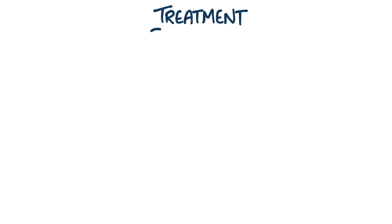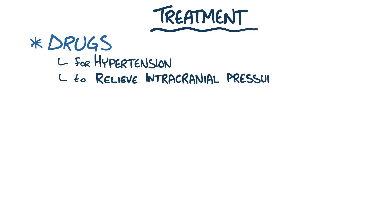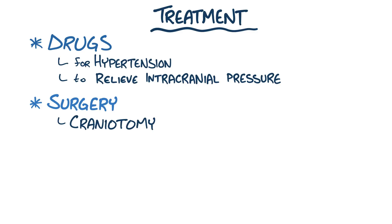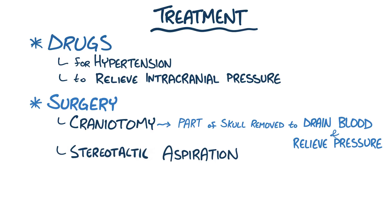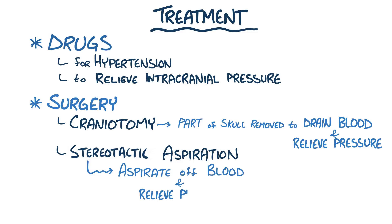Medical treatment of an intracerebral hemorrhage includes using drugs that help control hypertension and relieve intracranial pressure. In terms of surgery, a craniotomy is often helpful at relieving intracranial pressure when there is a bleed near the surface of the skull — part of the skull bone is removed to drain accumulated blood and relieve pressure. Alternatively, if there is a bleed located deep in the brain tissue, stereotactic aspiration can be done to aspirate blood and relieve intracranial pressure, guided by a CT scanner to direct a needle to the exact spot where the blood needs to be drained.